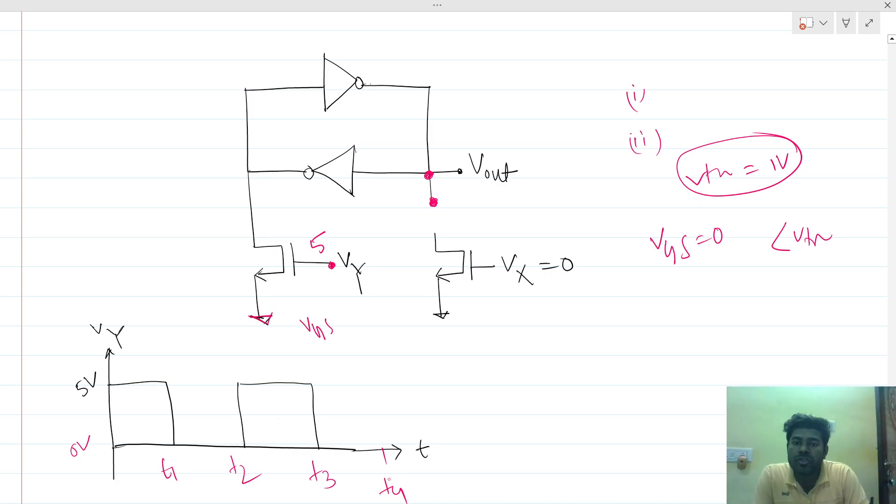Since S is grounded, the VGS of this MOSFET is greater than VTN, so this MOSFET will turn on. It will act as a pass MOSFET.